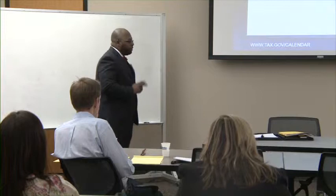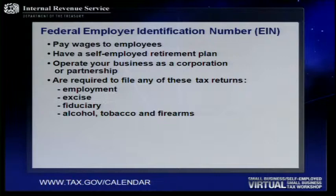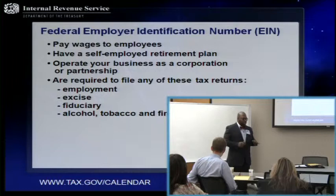As a federal matter, you have to get a federal employer identification number. That's also been called your tax ID number — a term that a lot of people are familiar with. It's like the social security number for your business; it helps separate you as an individual from your business. However, that is not the only thing that separates you from your business. There's a lot of confusion on how you file in the state.